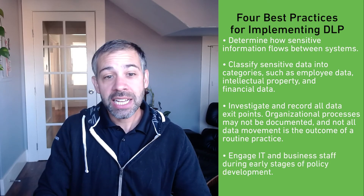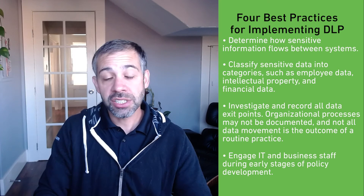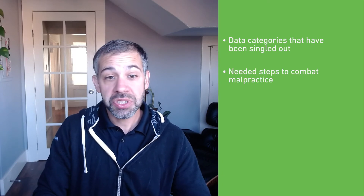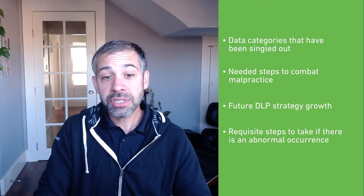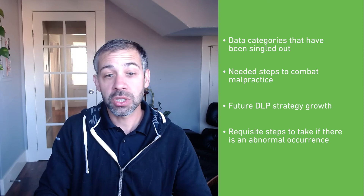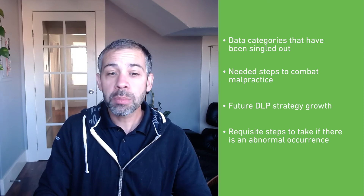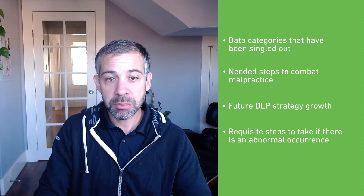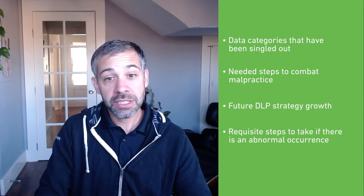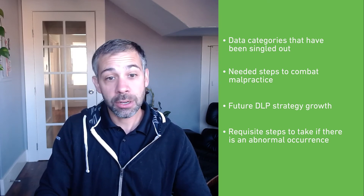Next, engage IT and business staff during early stages of policy development. You should identify data categories that have been singled out, needed steps to combat malpractice, future DLP strategy growth, and requisite steps to take if there is an abnormal occurrence. Before putting your DLP strategy into practice, establish incident management processes and ensure that they're practical for each data category.